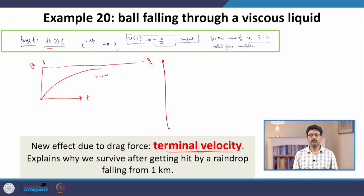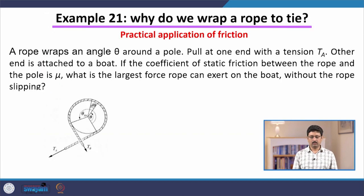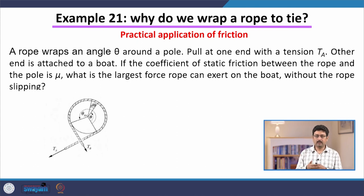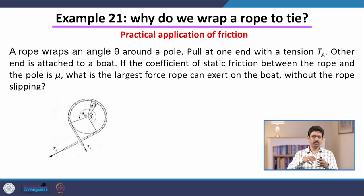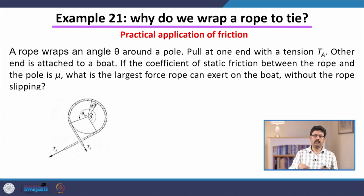This introduces the very important concept of terminal velocity. Now we go through another example of friction, but this time we return to dry friction between two solids. Some of you may already be familiar with this problem, but it is a very nice problem illustrating a practical application of friction. We all tie a rope around a pole when securing heavy objects such as a boat — the question is, why do we tie it around a pole?